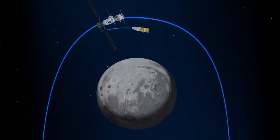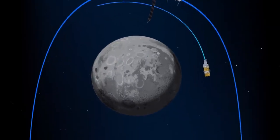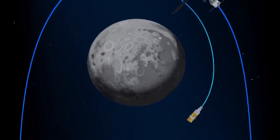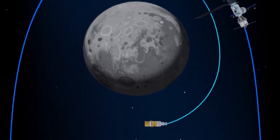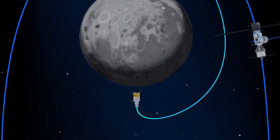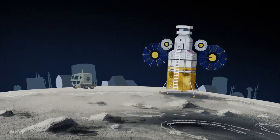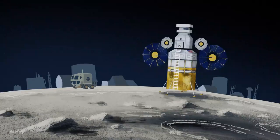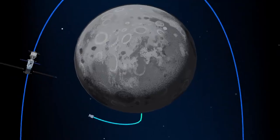The lunar lander system itself is built for three unique steps: descending from the halo orbit of Gateway down to a low lunar orbit, descending from low lunar orbit to the surface, and once the lunar mission is complete, launching from the surface of the Moon and ascending all the way back to the orbiting Gateway.